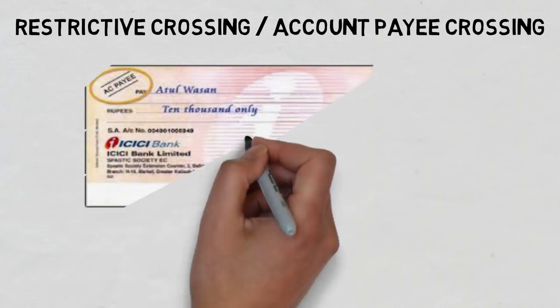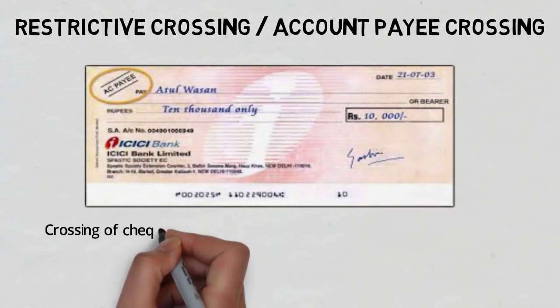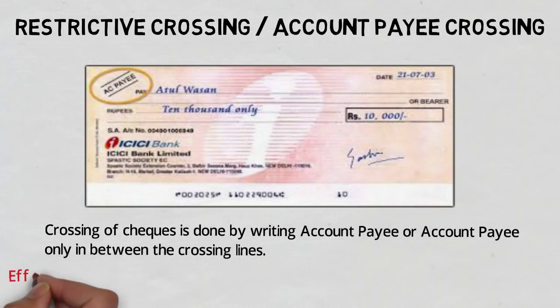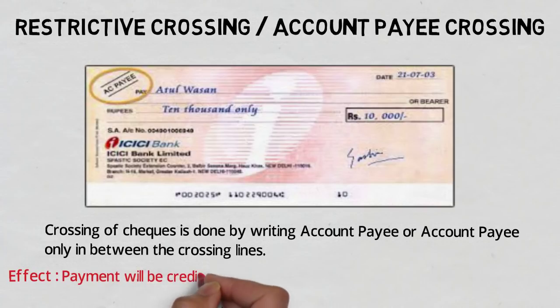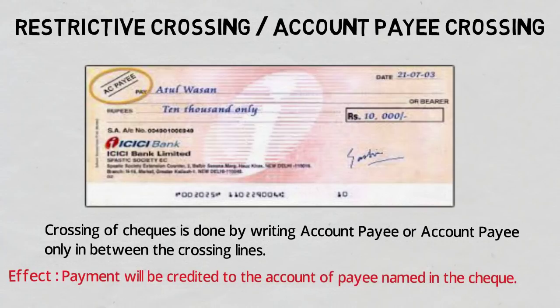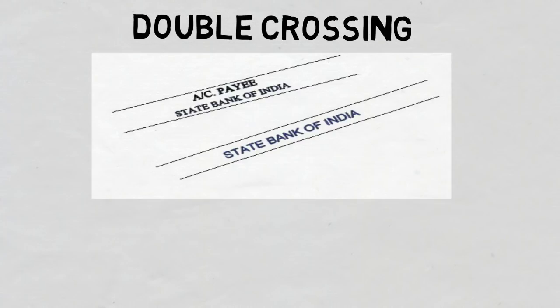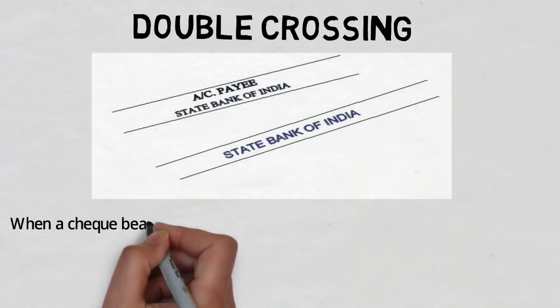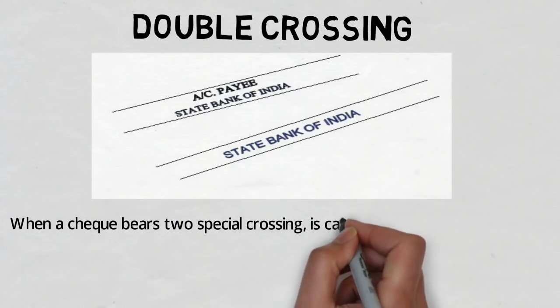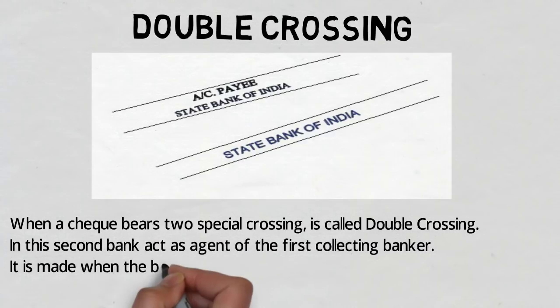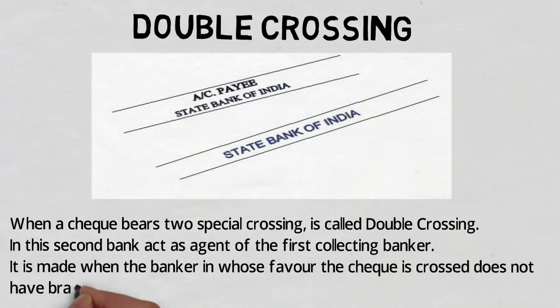In restrictive crossing, or account payee crossing, the crossing is done by writing 'account payee' or 'account payee only' in between the crossing lines, and the payment will be credited to the account of the payee named in the check. When a check bears two special crossings it is called double crossing. In double crossing, the second bank acts as an agent of the first collecting banker; it is used when the banker in whose favor the check is crossed does not have a branch where the check is to be paid.